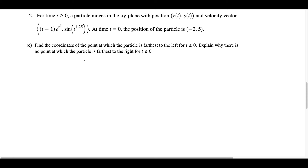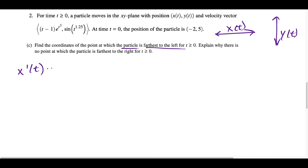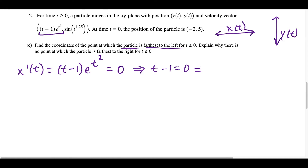For part C, we need to find the coordinates at which the particle is farthest to the left. Since x of t gives the particle's horizontal position, being farthest left means finding the minimum value of x of t. We find x prime of t — which is t minus 1 times e to the t squared — and set it equal to zero. Since e to the t squared is always positive, the only root comes from t minus 1 equals 0, giving t equals 1.